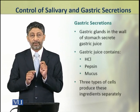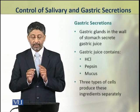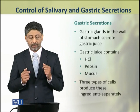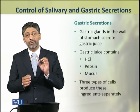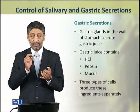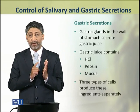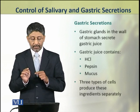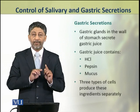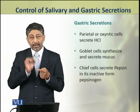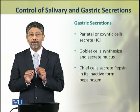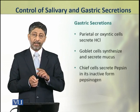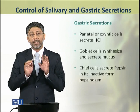Now we shall discuss the gastric secretions. Gastric glands in the wall of the stomach secrete gastric juice. This gastric juice contains three major components: hydrochloric acid, pepsin, and mucus. Three different types of cells produce these ingredients separately. The parietal or oxyntic cells secrete hydrochloric acid, while the goblet cells synthesize and secrete mucus.